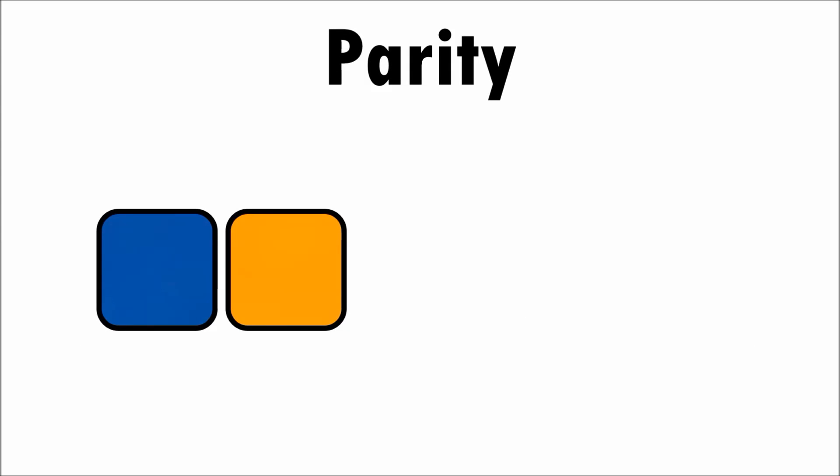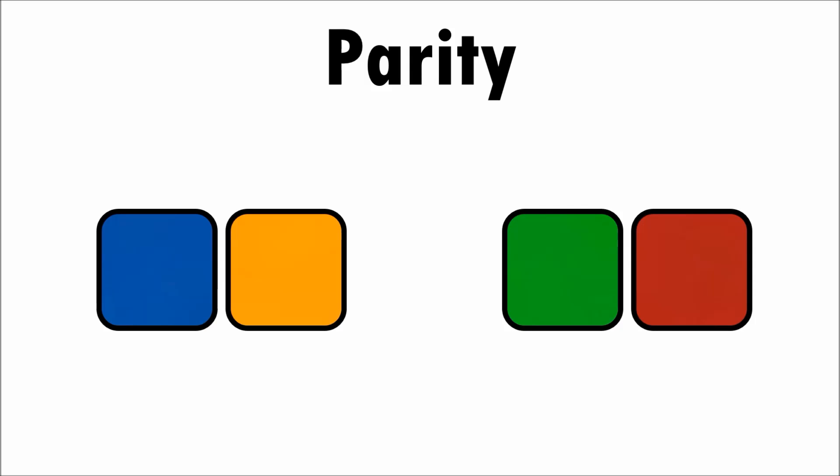The last thing to memorize is which two colors are parity. All you need to know is that blue and orange means parity, and green and red means parity. Any combination of two colors other than these would mean no parity.